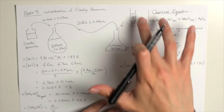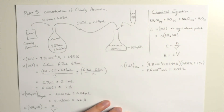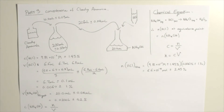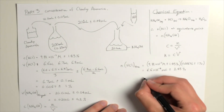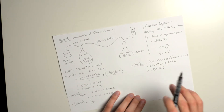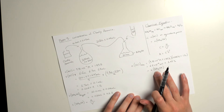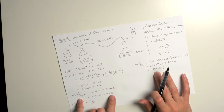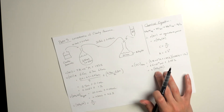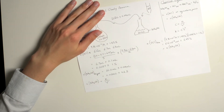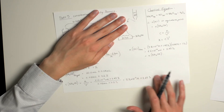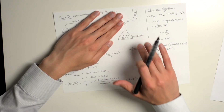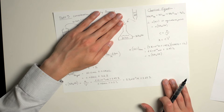Now that we know how many moles of hydrochloric acid were in the exact volume added, we can equate that to the moles of ammonium hydroxide in the conical flask — since the ratio is 1:1, there must have been an equal number of ammonium hydroxide ions. Knowing the moles and the volume of ammonium hydroxide, we can now calculate the concentration using the moles-over-volume ratio.